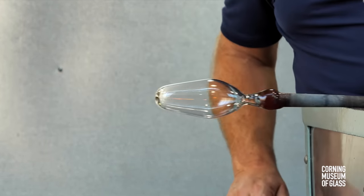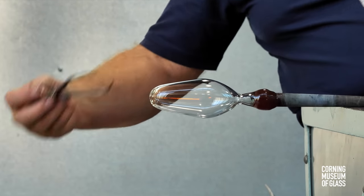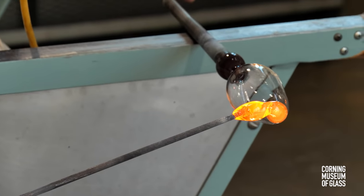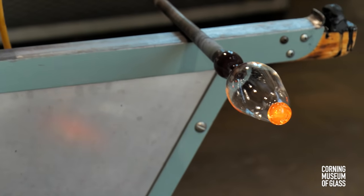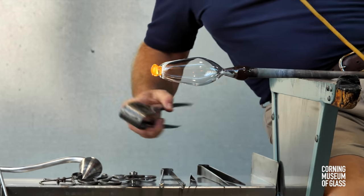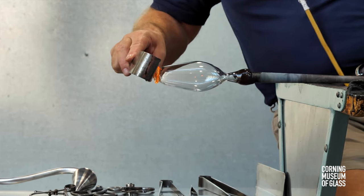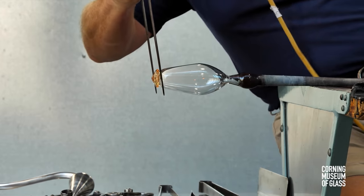The bottom has to be just the right diameter for the octagonal mold to work. A substantial gather of glass is added to the tip, and as shaping takes place, air is blown forcefully into the blowpipe. You can see the bubble beginning to form at the end.